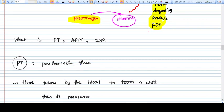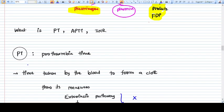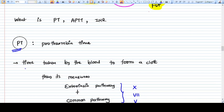What is PT, APTT, and INR? PT is a measurement of prothrombin time. It means the time taken by the blood to form a clot after it is exposed to tissue factor.